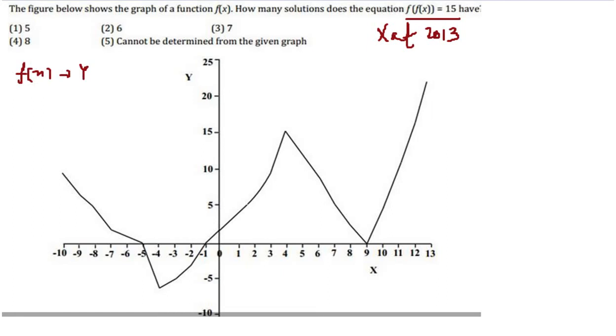So if f of something is 15, it's going to be a y value. If you see the y coordinates as 15 here, we can see that we have this value and this value of y as 15. Those are the only values.